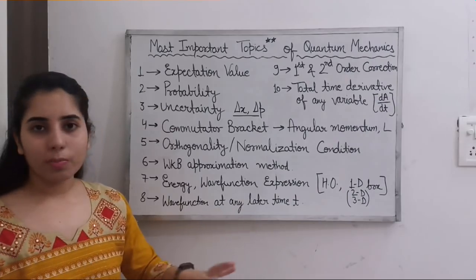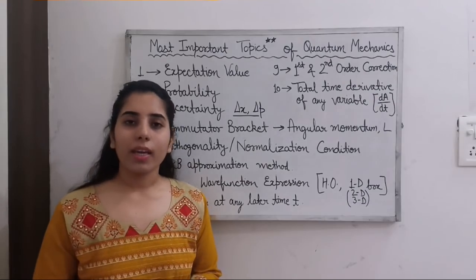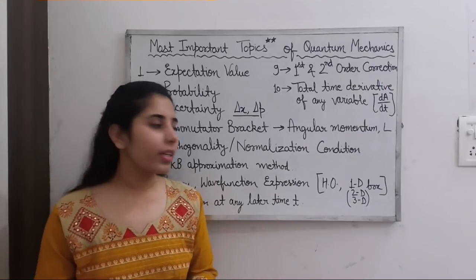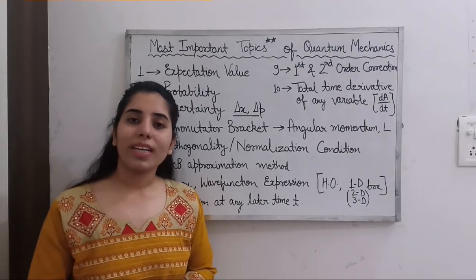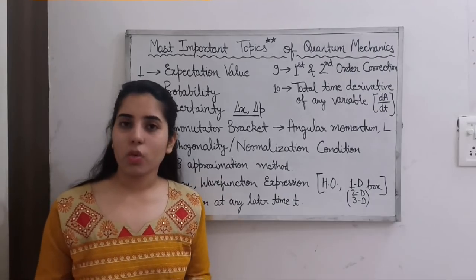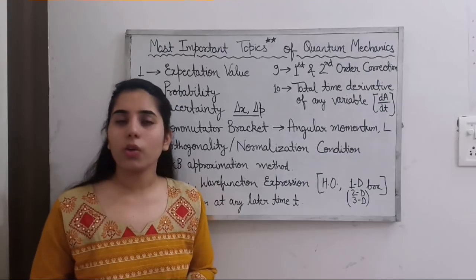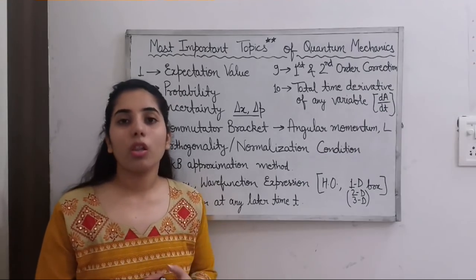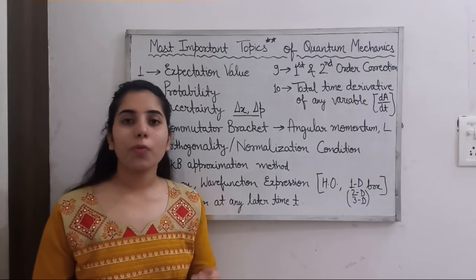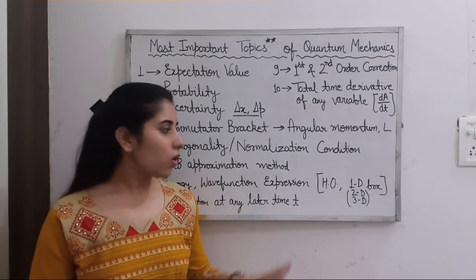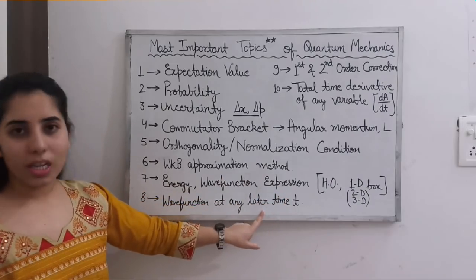The next topic is the wave function at any later time T. If a wave function is given to you at T equals zero and you need to find it at any later time T, we have a fixed expression in the form of an exponential function, which makes things very easy — just using that expression you can find the answer. You don't need to worry about taking too many steps. In such questions you may also require the energy expression for the system mentioned in the question, so the previous topic on energy expressions will help you here as well.